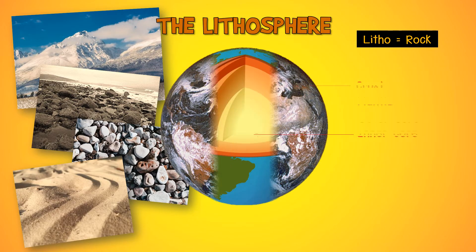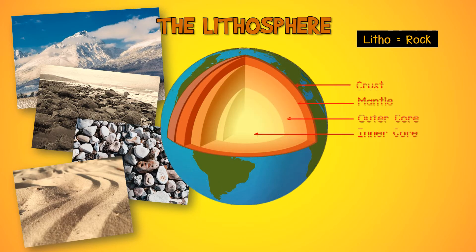The structure of the Earth may be divided into different layers. The outermost layer is the crust — this is where all living things exist. Below the crust is the mantle. The outer core and inner core of the Earth are found at the center of our planet. The outer core is made of melted rock called magma, and it is very hot at the outer and inner core.